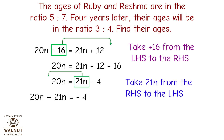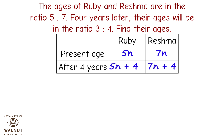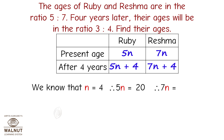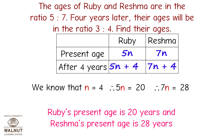Therefore minus n equals minus 4, so n equals 4. We know n equals 4, therefore 5n equals 20 and 7n equals 28. Ruby's present age is 20 years and Reshma's present age is 28 years.